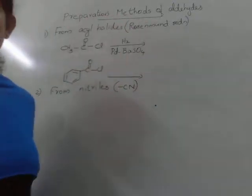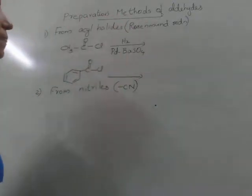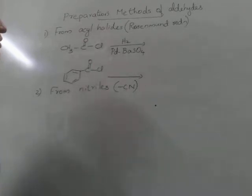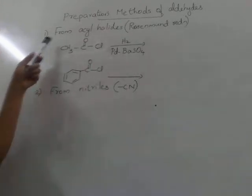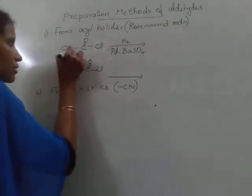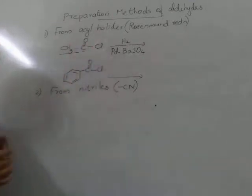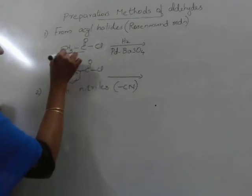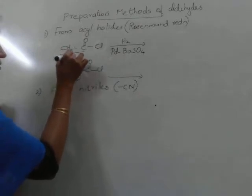Preparation methods of aldehydes — specifically methods used to prepare aldehydes only. The first method is from acyl halides. The acyl group means the CH₃CO group. This group is known as the acyl group. So this compound is acetyl chloride or ethanoyl chloride.